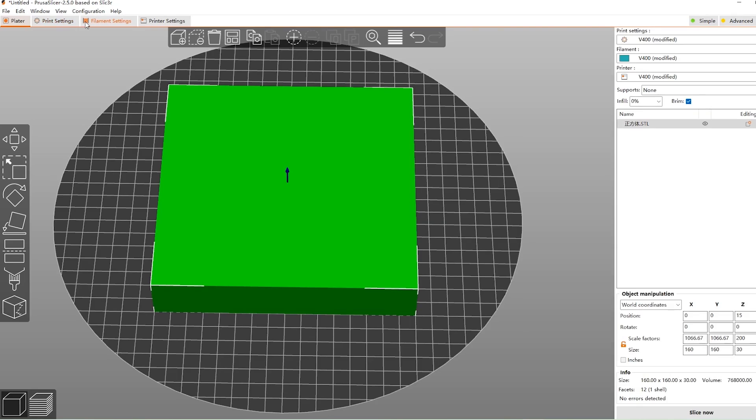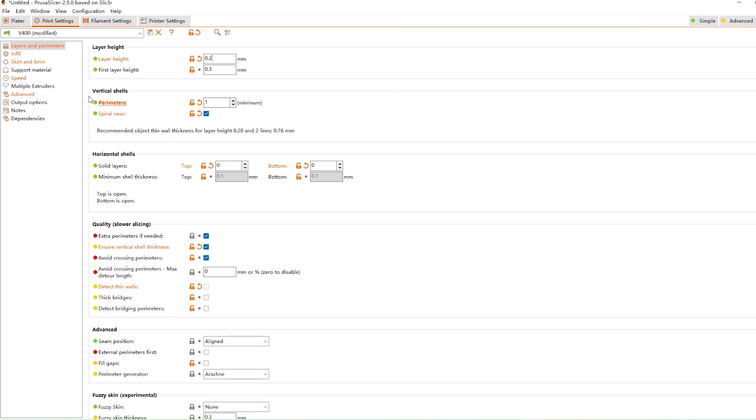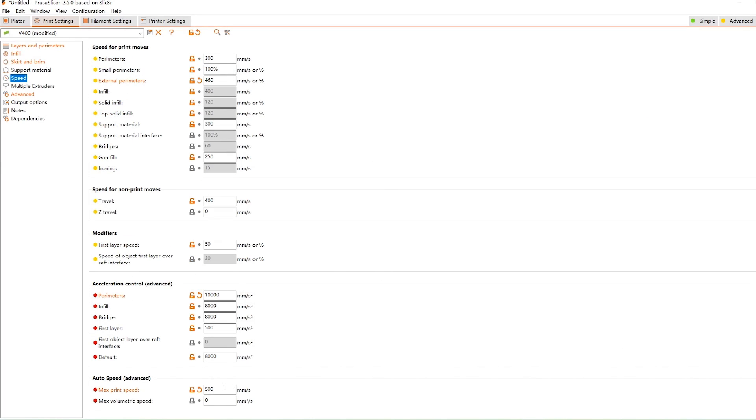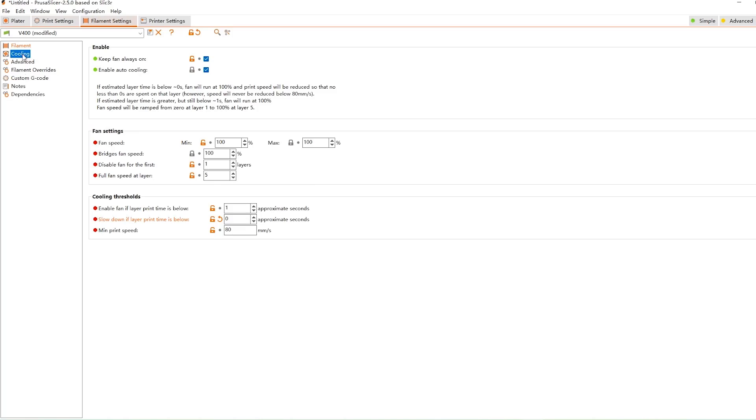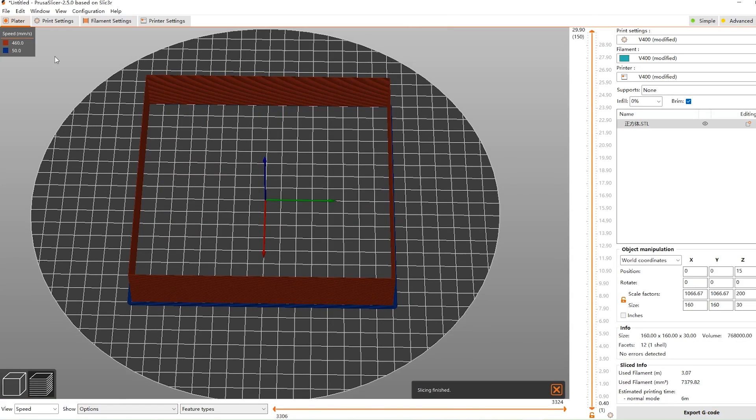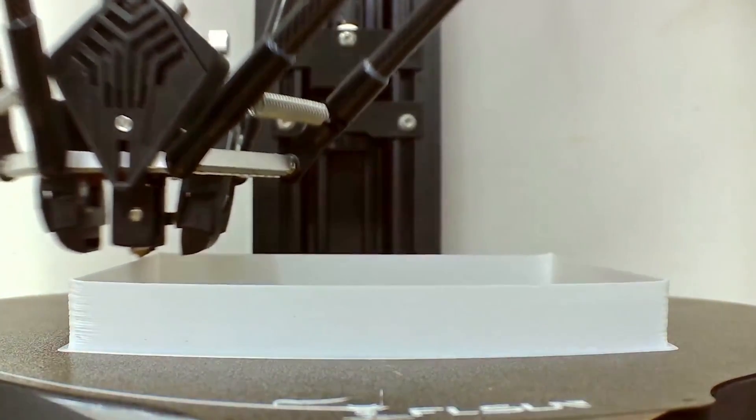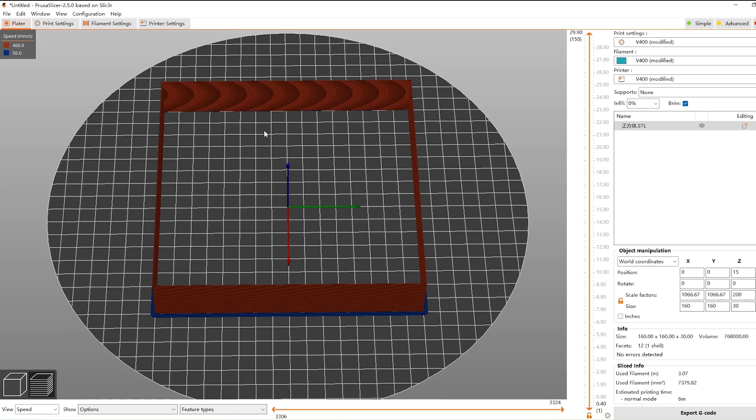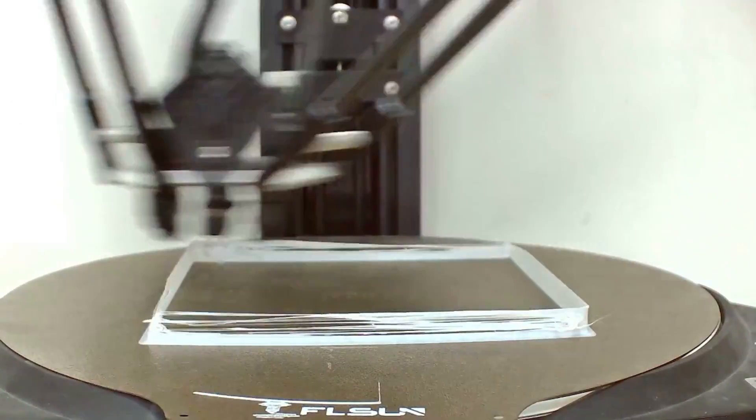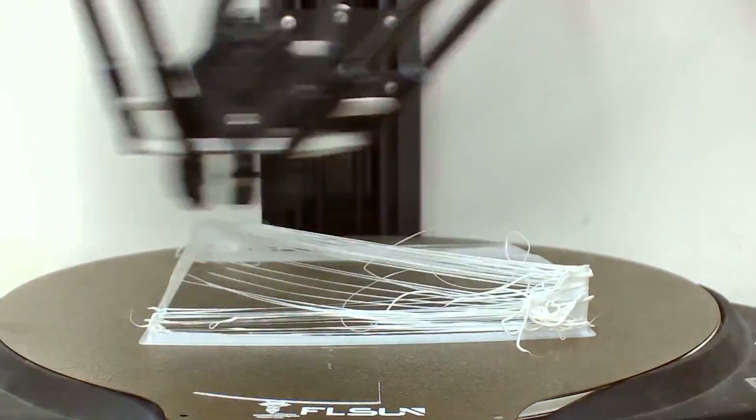Now, let's test the FLSUN V400 on that same basis. We adjusted the printing speed of the V400 to 460 millimeters per second, and we can see that the V400 barely finishes printing at 460 millimeters per second. We increased the speed of the FLSUN V400 to 480 millimeters per second, and we can clearly see that beyond 460 millimeters per second, the FLSUN V400 is completely unable to maintain that speed.